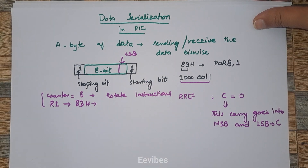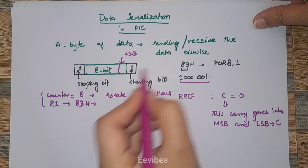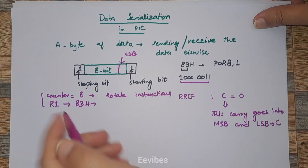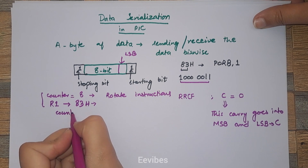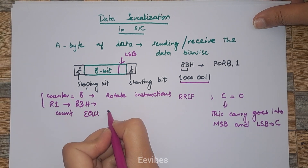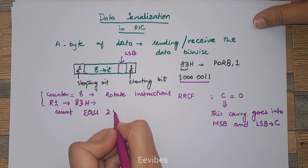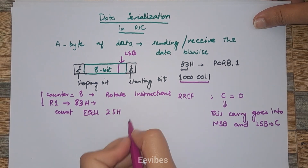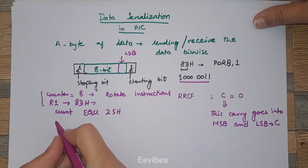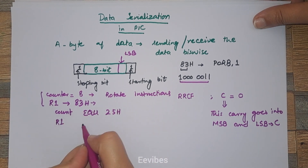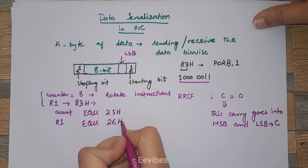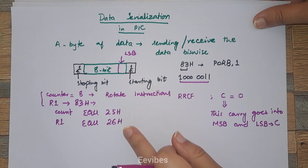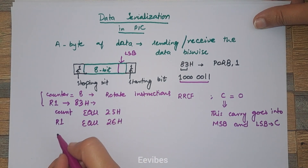Now let's start implementing the problem. First, I need to allocate memory for the counter: COUNT EQU 25h — that is the memory location for storing the counter value. Similarly, R1 EQU 26h. These are two consecutive memory locations that will store the counter and the data value respectively.